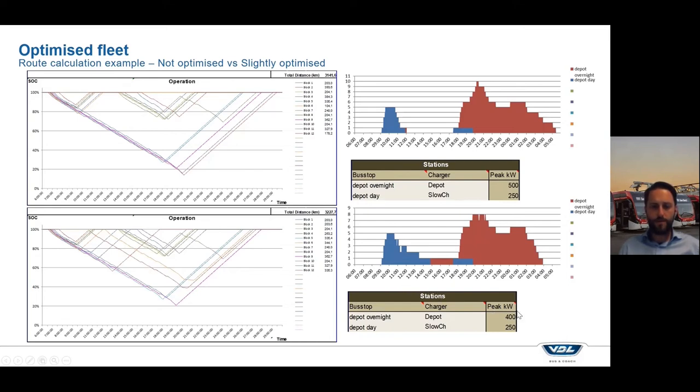A different thing to notice that's really important for customers is the peak that you need on the energy, on the grid connection. This is only 12 buses, so it's not too much, but still we reduced from 500 to 400. If you can spread out this charging peak a bit more, only go to five, then you might even need only 250 kilowatts at the same time on your depot.